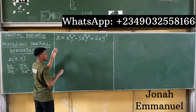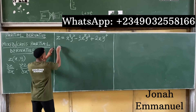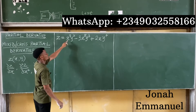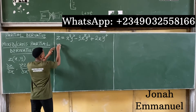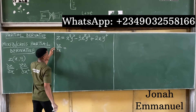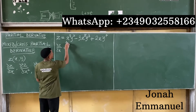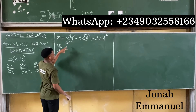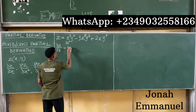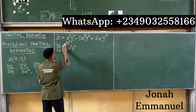First, let me differentiate z with respect to x to get ∂z/∂x. Differentiating x cubed gives 3x squared, and multiplying by y squared gives us 3x²y² for the first term.